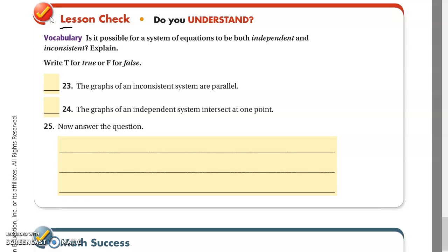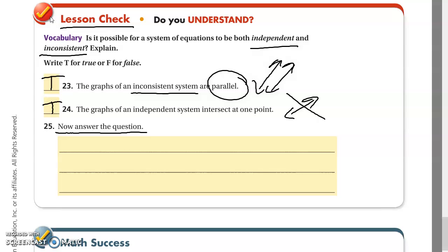Do you understand? Lesson check. This is what you do on your own. You show it to me. You get credit for this. Vocabulary. Is it possible for a system of equations to be both independent and inconsistent? Explain. Okay. And I'm going to give you the answer to this, so now you can answer it and explain it yourself. The graphs of inconsistent systems are parallel. True. Inconsistents are parallel. That is true. They're going to look like this. Number 24. The graphs of independent systems intersect at one point. True. So they're going to be like this. So they're asking, is it possible to be both this and this? Explain. Is it possible to be parallel and intersect?